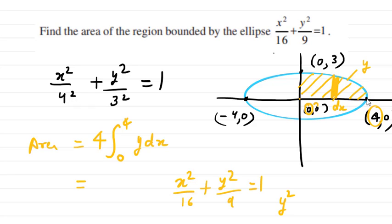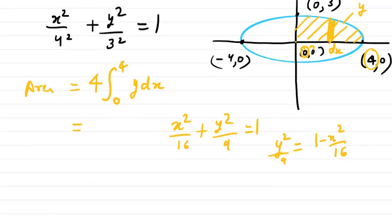So y²/9 equals 1 - x²/16, and then we will get the value of y from here. So y can be written as—